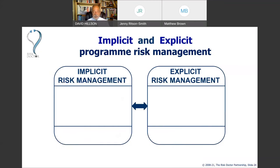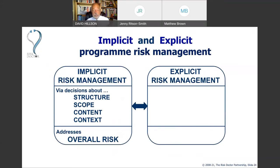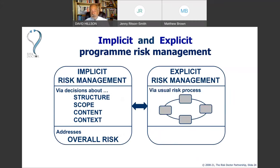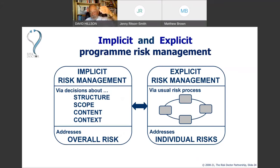To summarise the two levels: we manage the overall riskiness of the programme implicitly by considering the structure, scope, content, and context of the programme as a whole — maintaining risk efficiency. Explicit risk management uses a typical risk management process to address individual risks within the programme. With these two levels together, we can tackle risks that come from above and below, and also risks at the level of the programme itself.